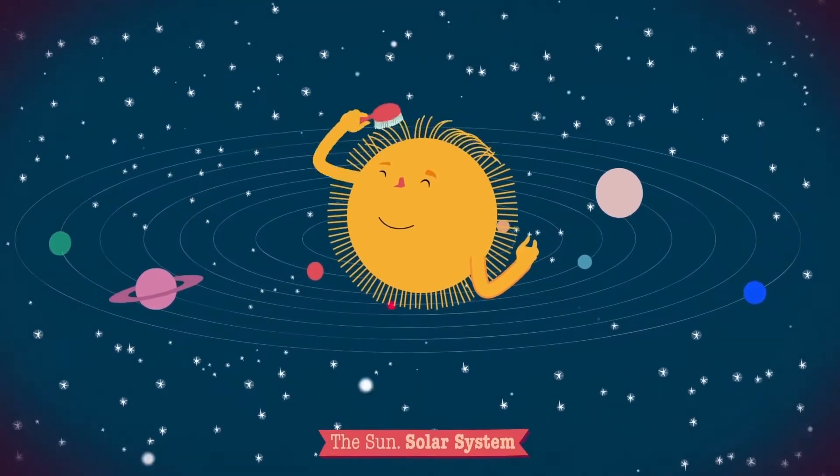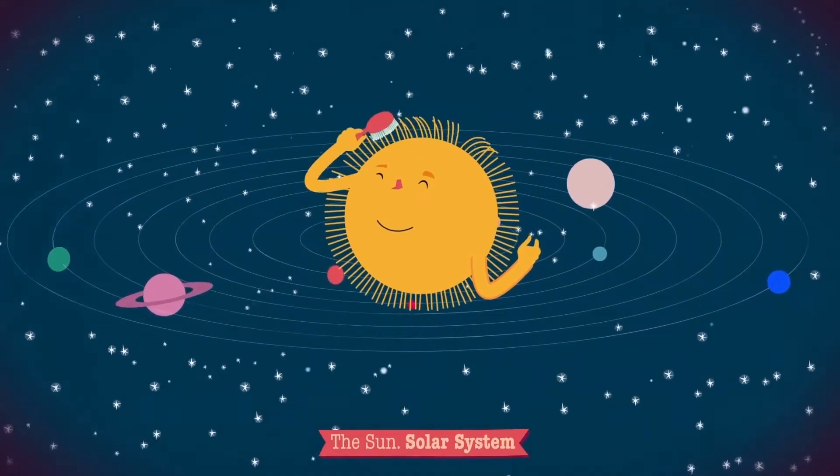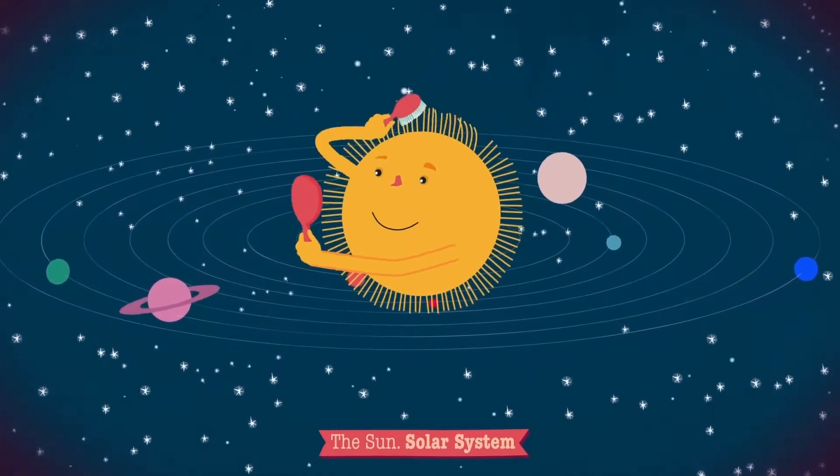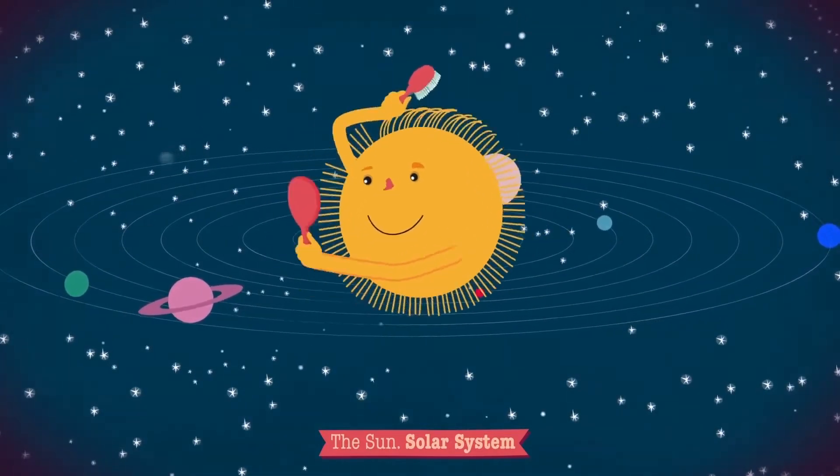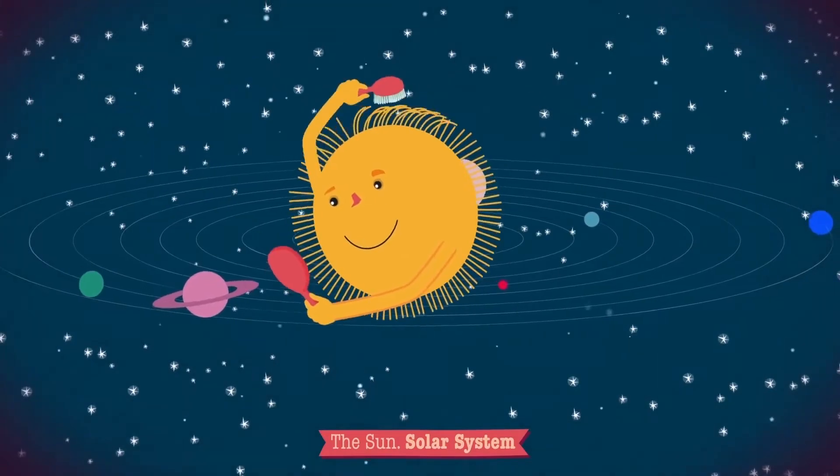La superficie del Sol está llena de unas estructuras que se asemejan a briznas de hierba o cabellos, y se llaman espículas. Son chorros de gas confinados por los campos magnéticos de la atmósfera solar.